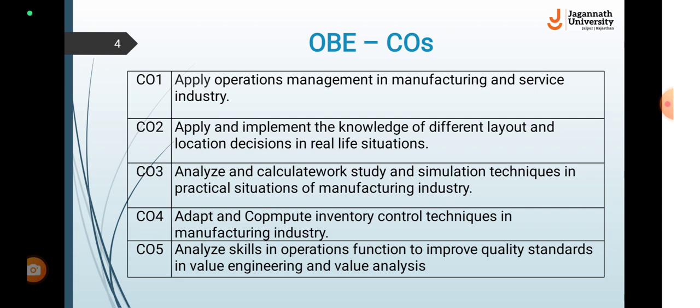The second outcome will be achieved after studying the next three units, that is units 4, 5 and 6, where we will cover product designing, service designs, factory planning and other topics. The next course outcome is to analyze and calculate work study and simulation techniques in practical situations of manufacturing industries.